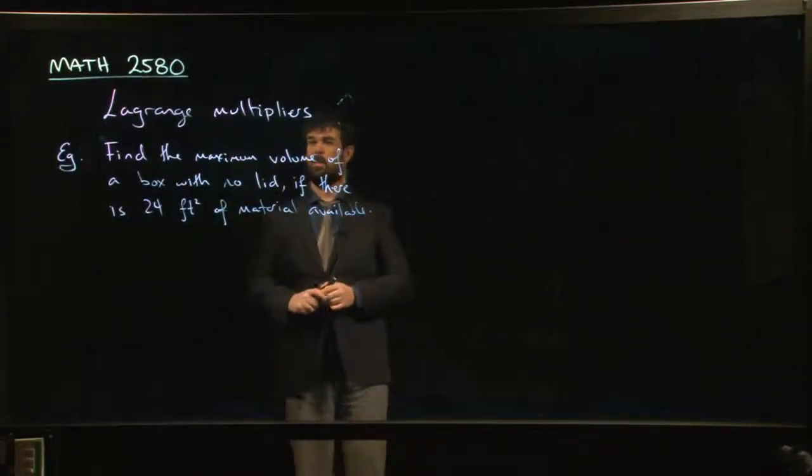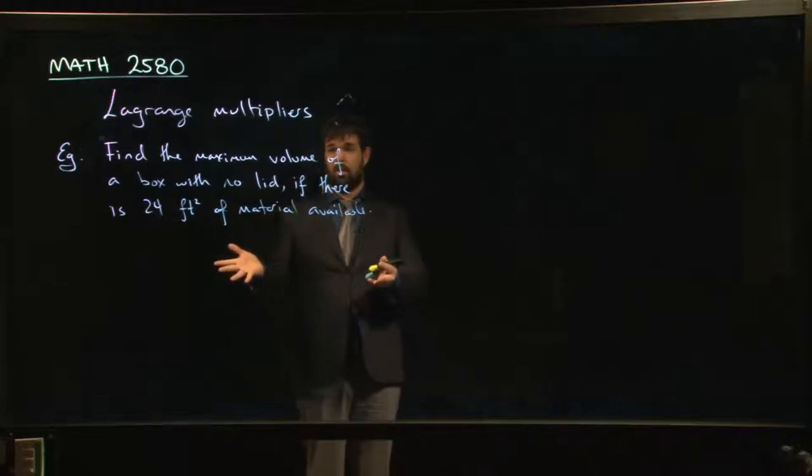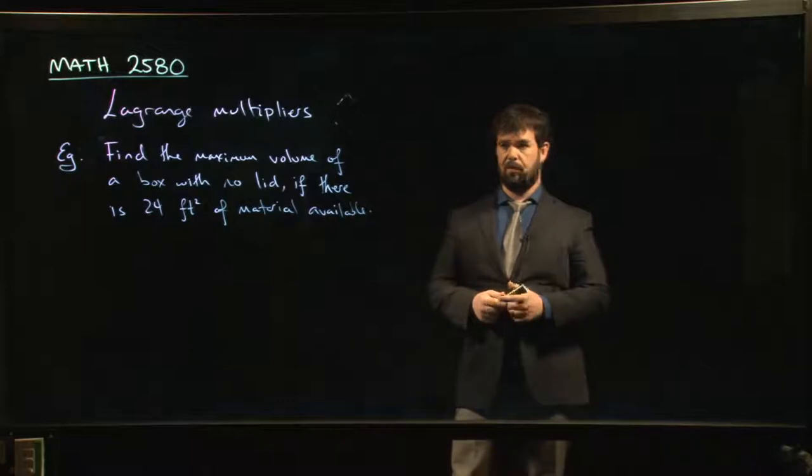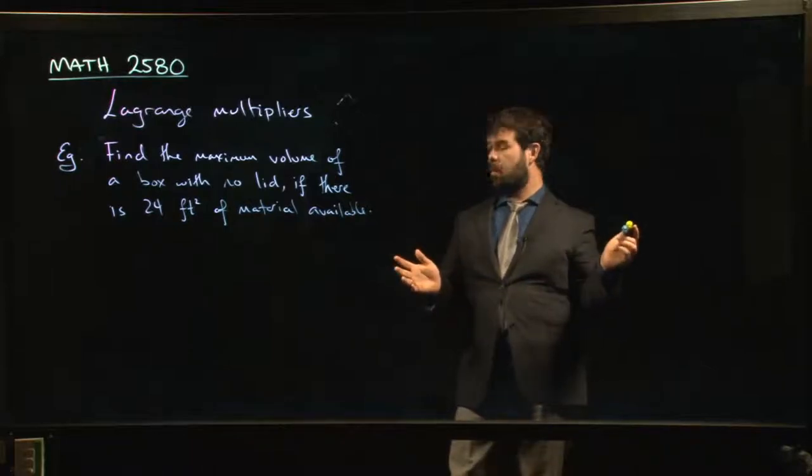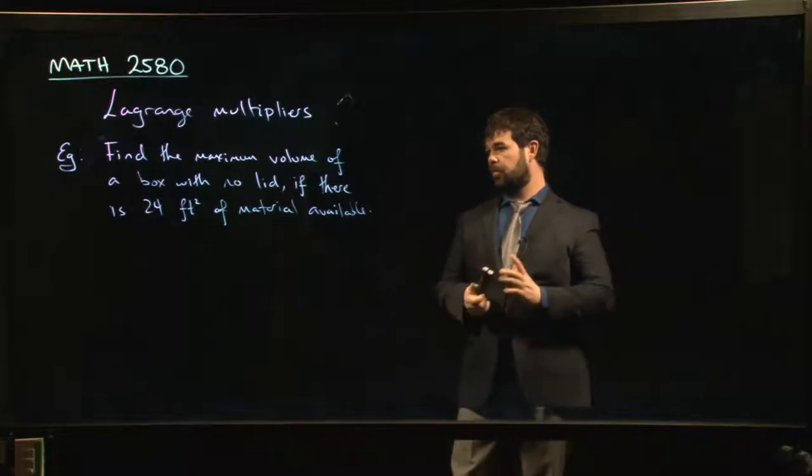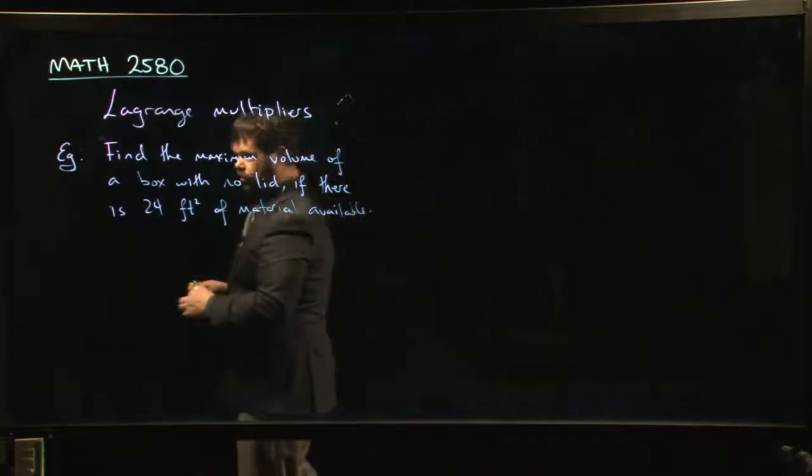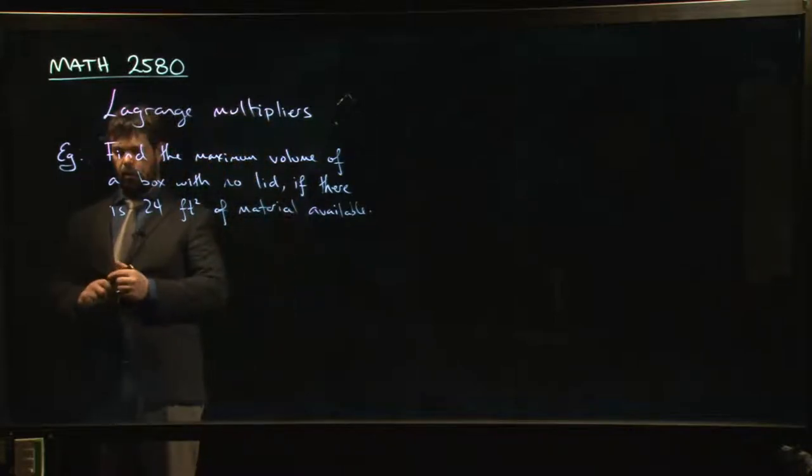All right, so for our next Lagrange multiplier example, we're going to go with a classic word problem. You'll all remember this sort of one from Calc 1, right? Box with no lid. We want to find the maximum volume given the surface area, given the amount of material that's available. So let's think, how do we set this thing up?